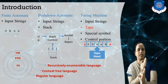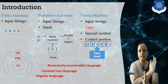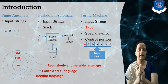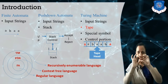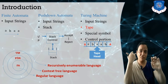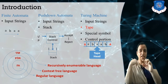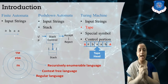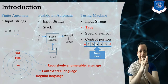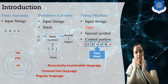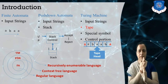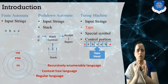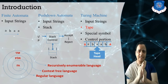In a pushdown automata and in a finite automata, we move just left to right to read the character, and we are not updating it. But here, this input tape is like a memory where we can read the character and also replace it — meaning we can also perform a write operation. This tape moves either left or right, always one step at a time.